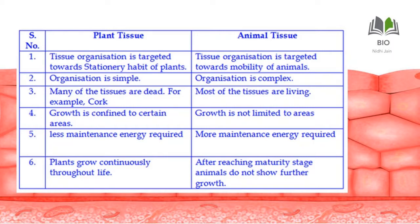Growth in plants is confined to specific areas — mostly plants grow from the tip or from the side. In animal tissue, growth is not limited to specific areas; the complete body grows. Plant tissue requires less maintenance energy, while in animals more maintenance energy is required. Plants grow continuously throughout their life, while in animals, after reaching the majority stage, growth stops.